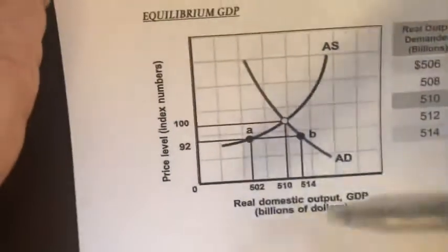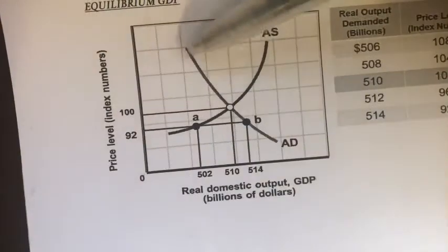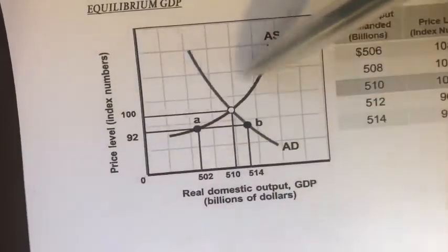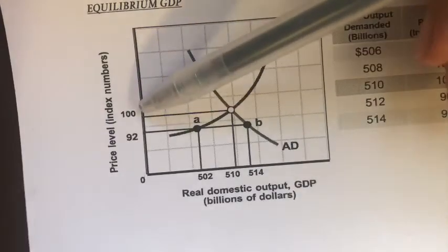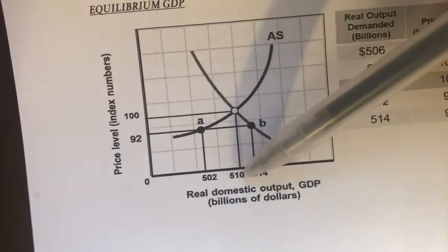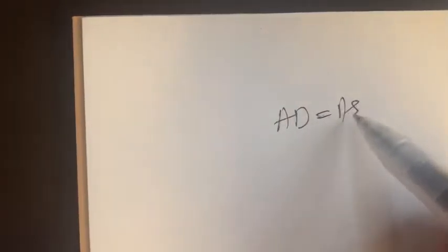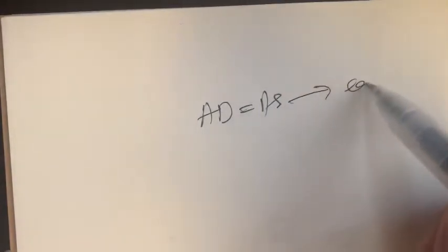To put it into the diagram, you can see here — this is the aggregate demand and aggregate supply. This is the point of intersection at price 100 and GDP level 510. So when aggregate demand equals aggregate supply, we basically have an equilibrium GDP.